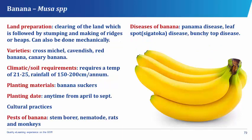The banana has its botanical name as the Musa species. In banana planting, the land is cleared which is followed by stumping and making of ridges or heaps. It can also be done mechanically. Banana has different varieties which include the Gros Michel, the Cavendish, the red banana, and the canary banana. The climatic or soil requirement of banana is a temperature of about 21 to 25 degrees centigrade and a rainfall of about 150 to 200 centimeters per annum. Planting materials for banana are the banana suckers.